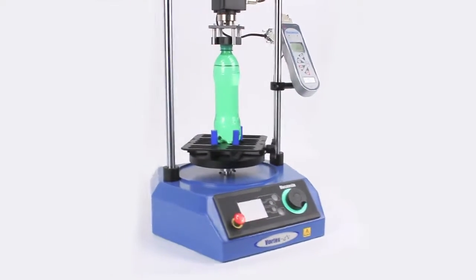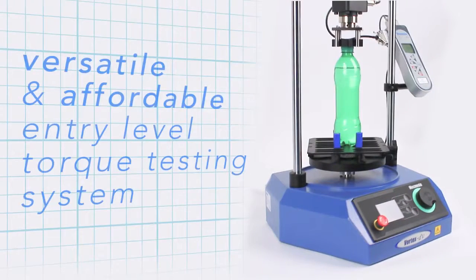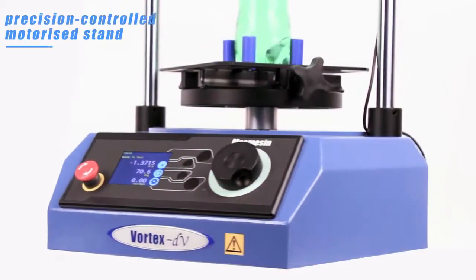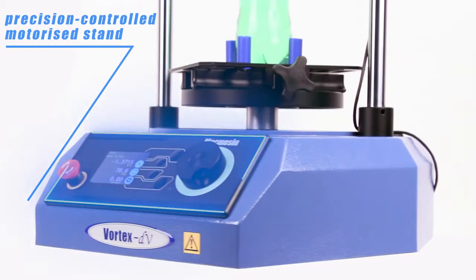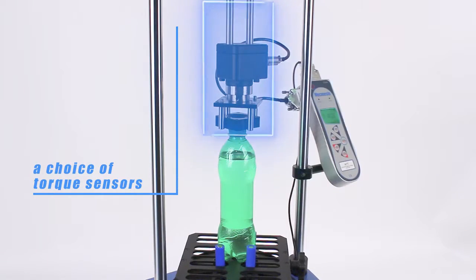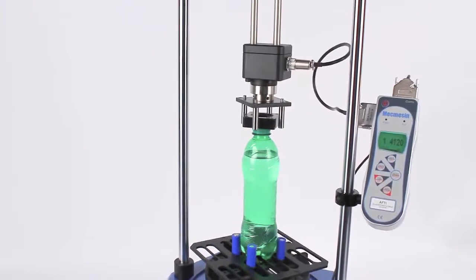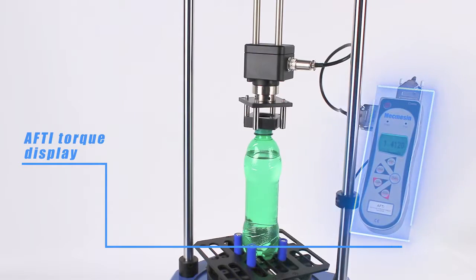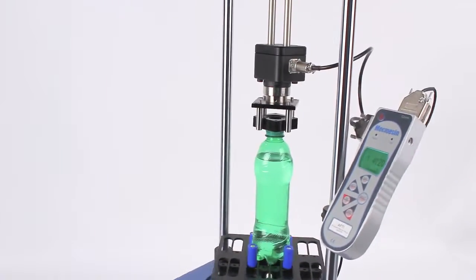The versatile and affordable Vortex DV is the latest entry-level torque testing system from Mecmesin. Combining a precision-controlled motorized stand with a choice of torque sensors and an AFTI torque display, Vortex DV is simple to use but delivers repeatable testing with accurate results while protecting the operator from repetitive strain injury.